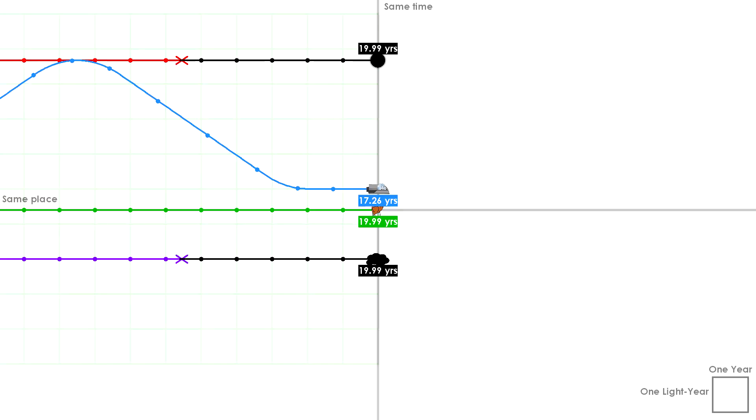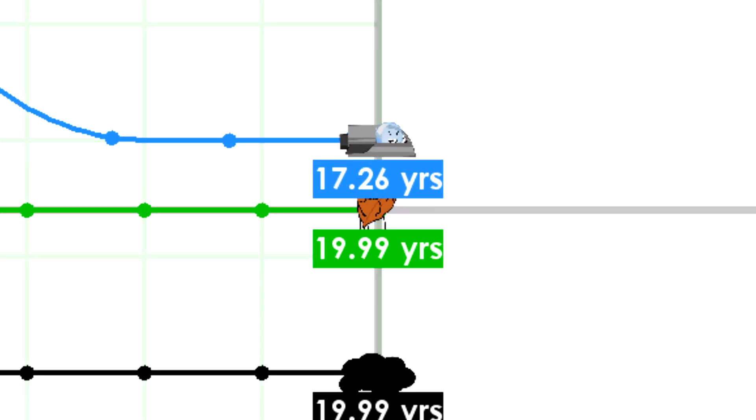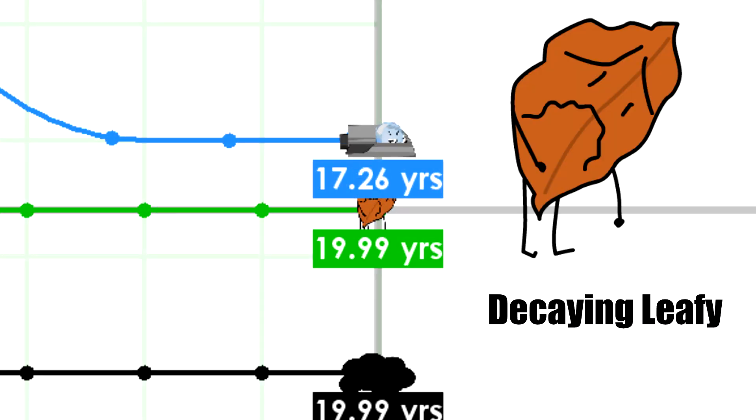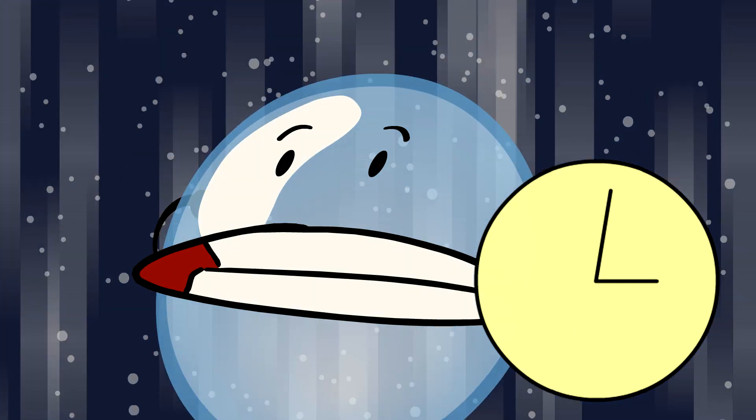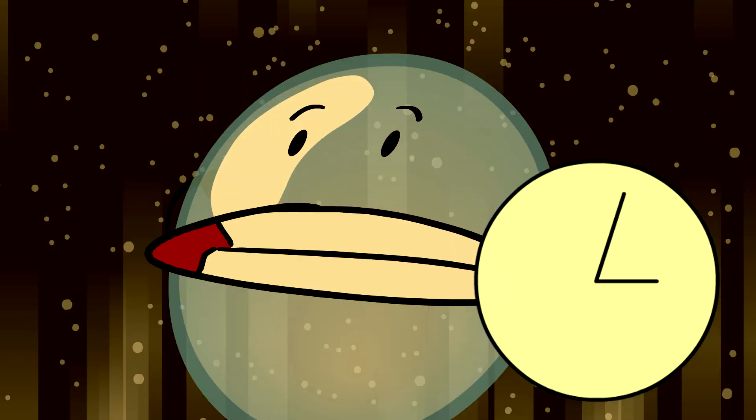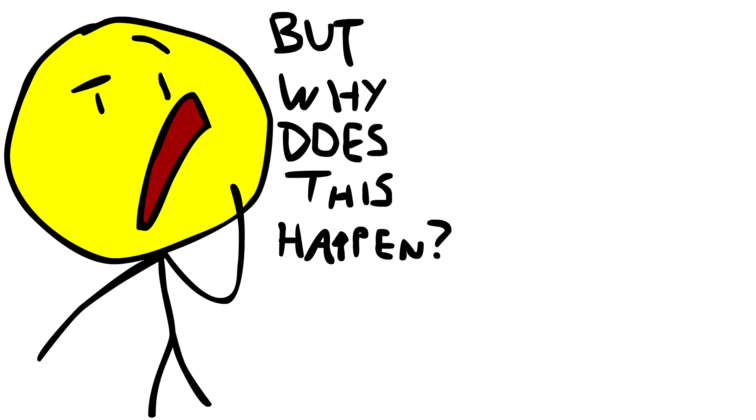But hold on! When Bubble returned home, she ended up almost three years younger than Leafy, who stayed put. I'm sure you've heard of this before. If an object is moving really fast, its time slows down. But why does this happen? Let's find out.